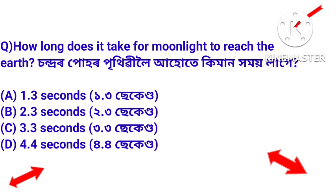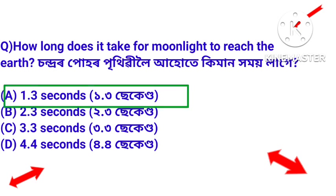Next question: how long does it take for moonlight to reach the Earth? Answer: 1.3 seconds. Moonlight takes approximately 1.3 seconds to reach the Earth.